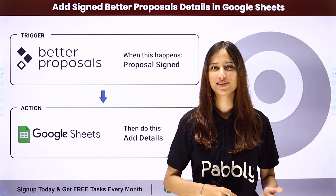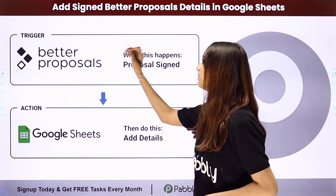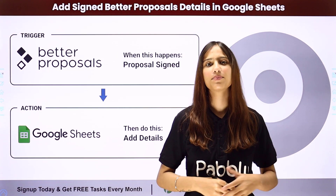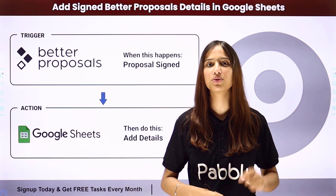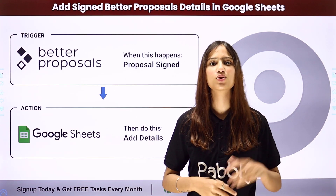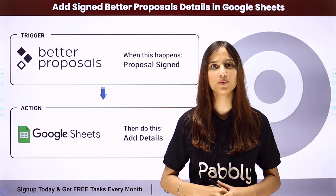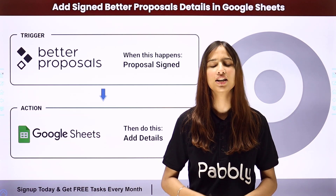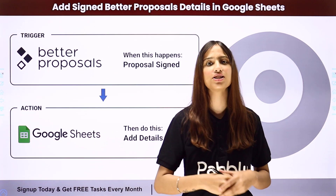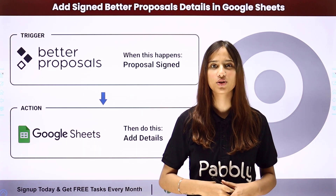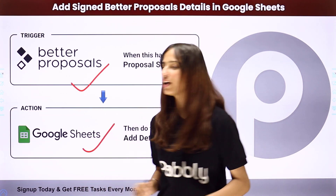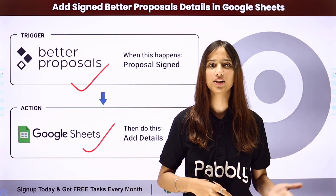Hello everyone, welcome back to Pabbly. In today's video we are going to understand how to add signed Better Proposals details in Google Sheets. Here, let's suppose that you have sent a proposal to your clients using Better Proposals. Your objective is that whenever a client signs that proposal, you want to automatically add the details in your Google Sheets. To do this, you need to build an integration between these two applications using Pabbly Connect. My trigger application will be Better Proposals and my action application will be Google Sheets.